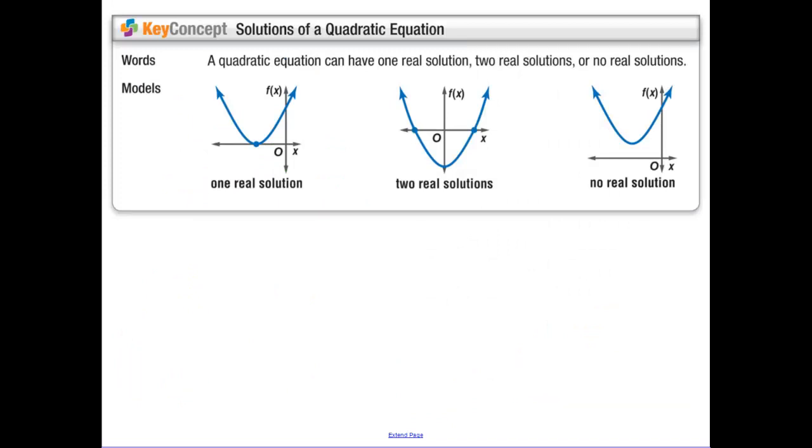Solutions to a quadratic equation. You can have one real solution if your vertex is sitting on that x-axis. You can have two solutions if your graph hits your x-axis twice. And then you can have no real solutions if your entire graph is above the x-axis, or if your entire graph and you open down is below the x-axis.